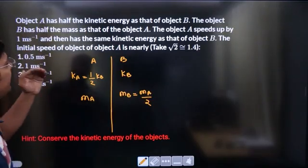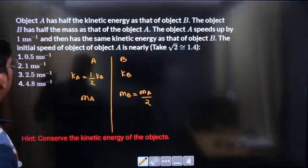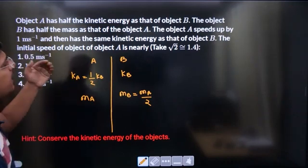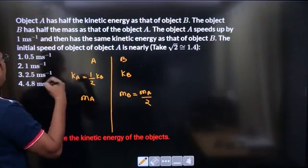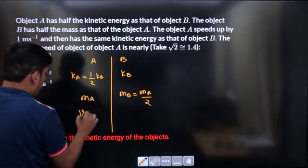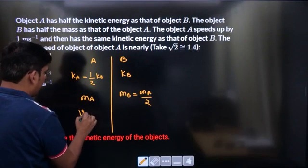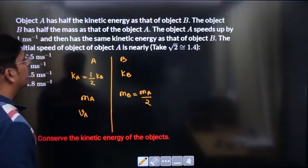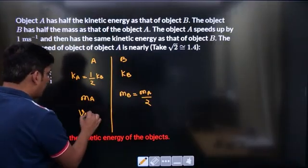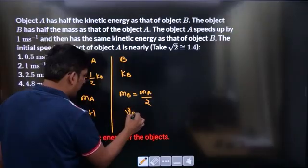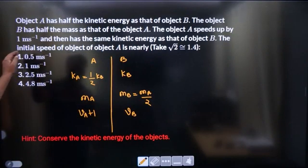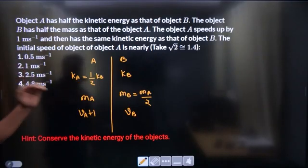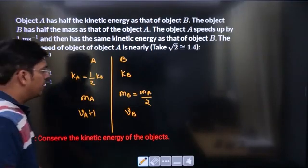Object A speeds up by 1 meter per second and then has the same kinetic energy as that of B. If its velocity was VA, it speeds up by 1 meter per second, its velocity was let it be VB, they will have the same kinetic energies. The initial speed of object A is nearly what?